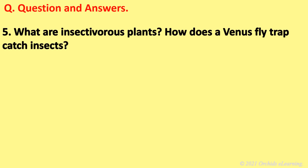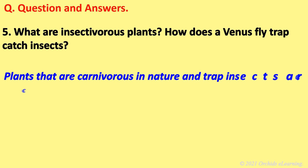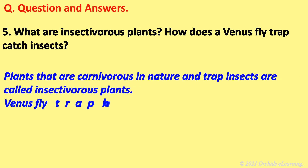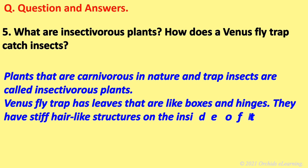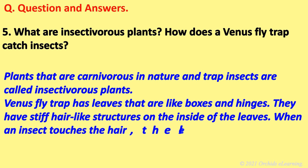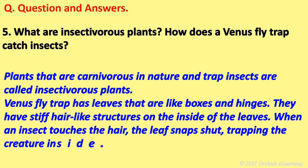What are insectivorous plants? How does a Venus flytrap catch insects? Plants that are carnivorous in nature and trap insects are called insectivorous plants. Venus flytrap has leaves that are like boxes and hinges. They have stiff hair-like structures on the inside of the leaves. When an insect touches the hair, the leaf snaps shut, trapping the creature inside.